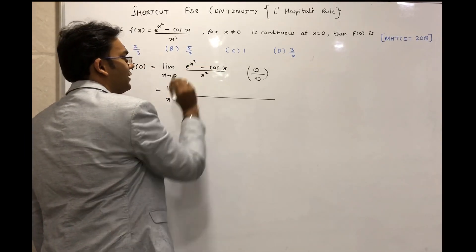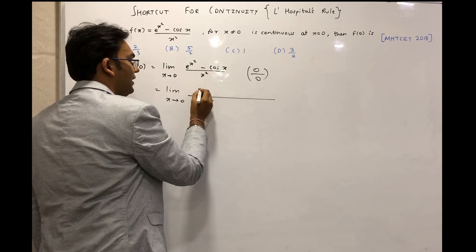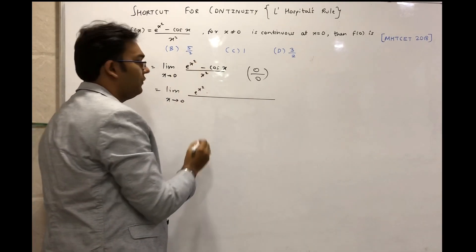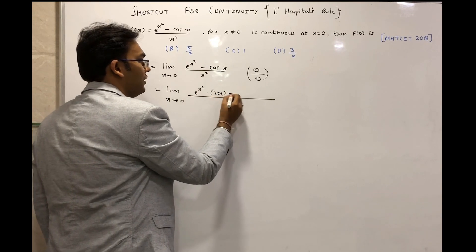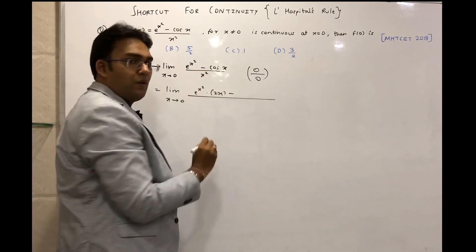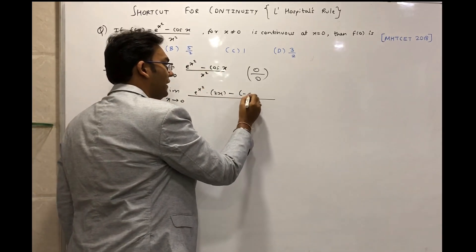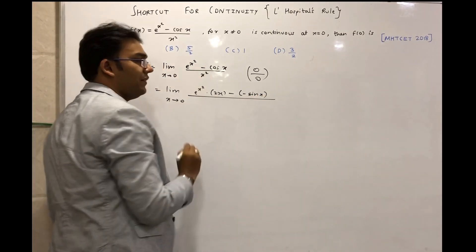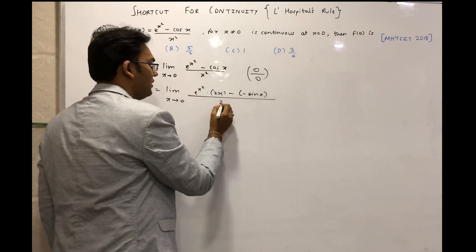It will be e^(x²) derivative is e^(x²) times derivative of x² which is 2x, minus derivative of cos x is -sin x, the whole upon derivative of x² which is 2x.